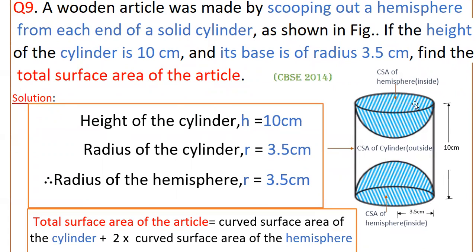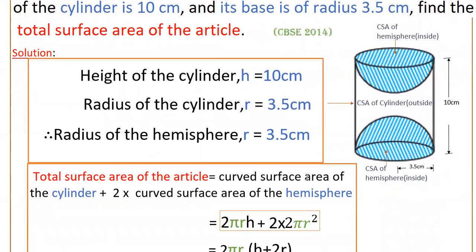The total surface area of the article consists of the curved surface area of the cylinder on the outside, plus the curved surface area of the two hemispheres scooped from each end. So the total surface area equals the curved surface area of the cylinder plus 2 times the curved surface area of one hemisphere.